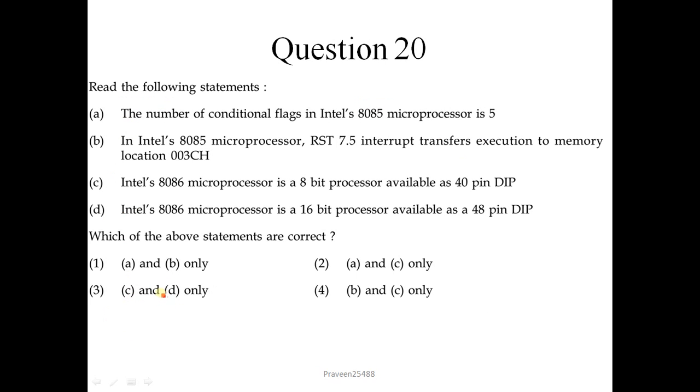Question number 20: Read the following statements. The number of conditional flags in Intel's 8085 microprocessor is 5. You know that there are 5 flags in a flag register: sign flag, zero flag, auxiliary carry flag, parity flag and carry flag. So this statement is correct. In Intel's 8085 microprocessor, RST 7.5 interrupt transfers execution to memory location 003CH. To know the vector location of any interrupt, 7.5 multiply by 8 gives 60 in decimal.